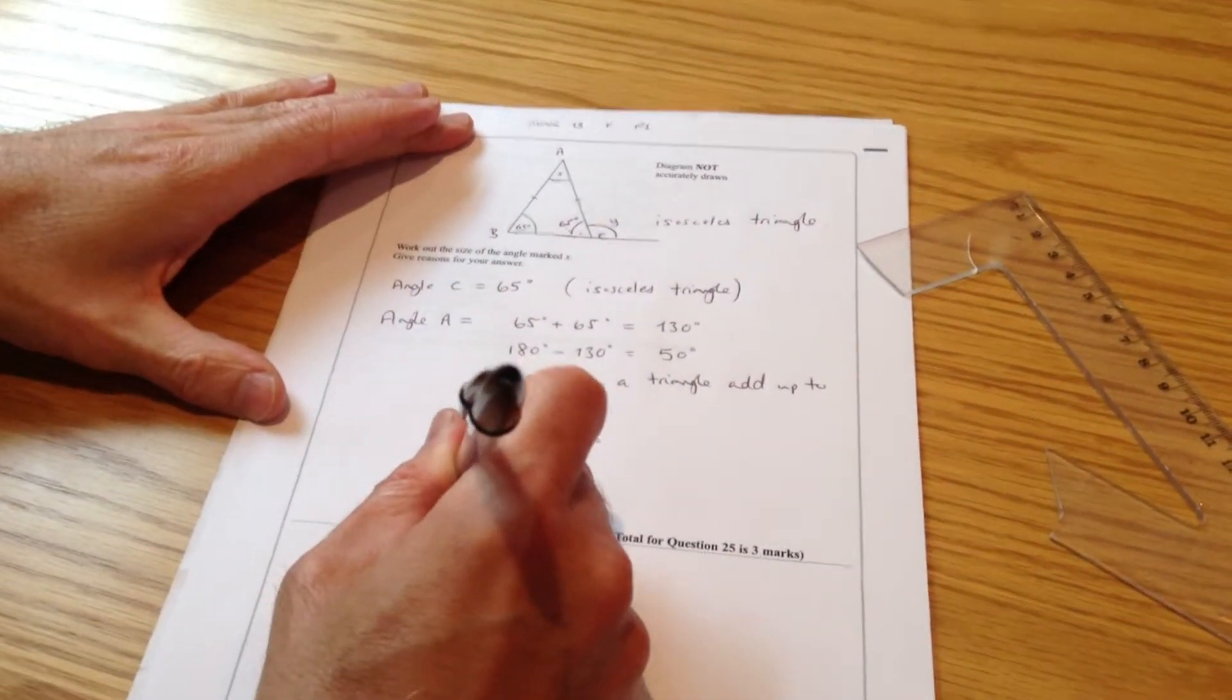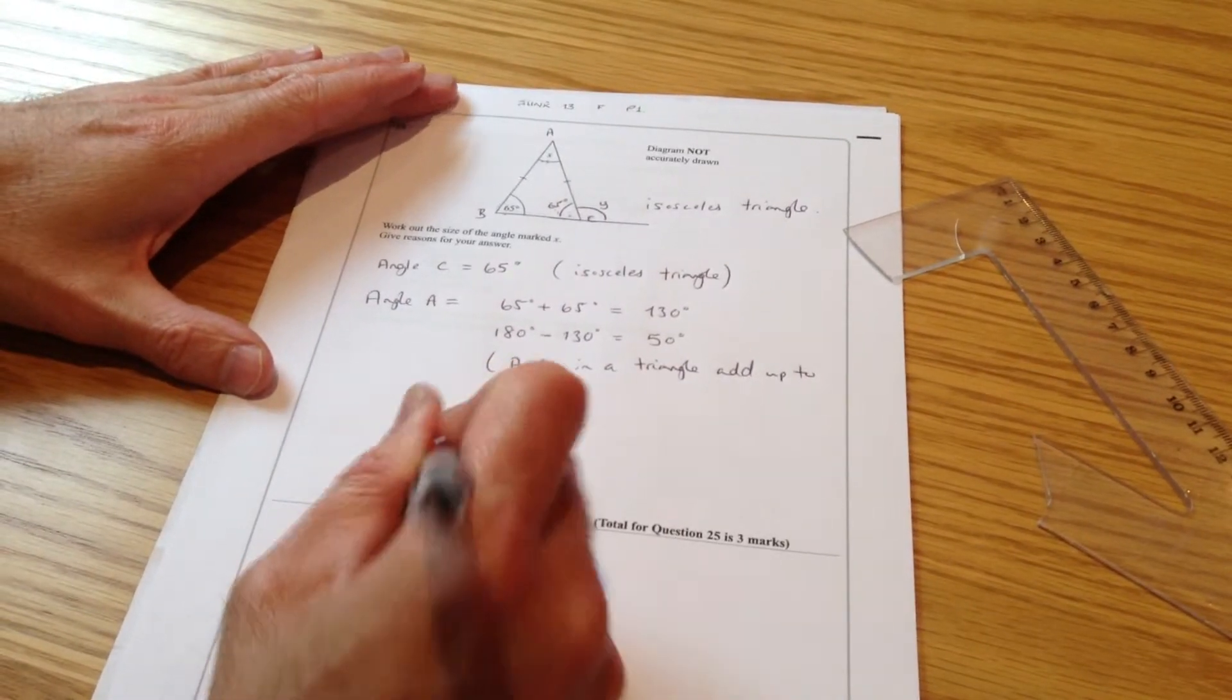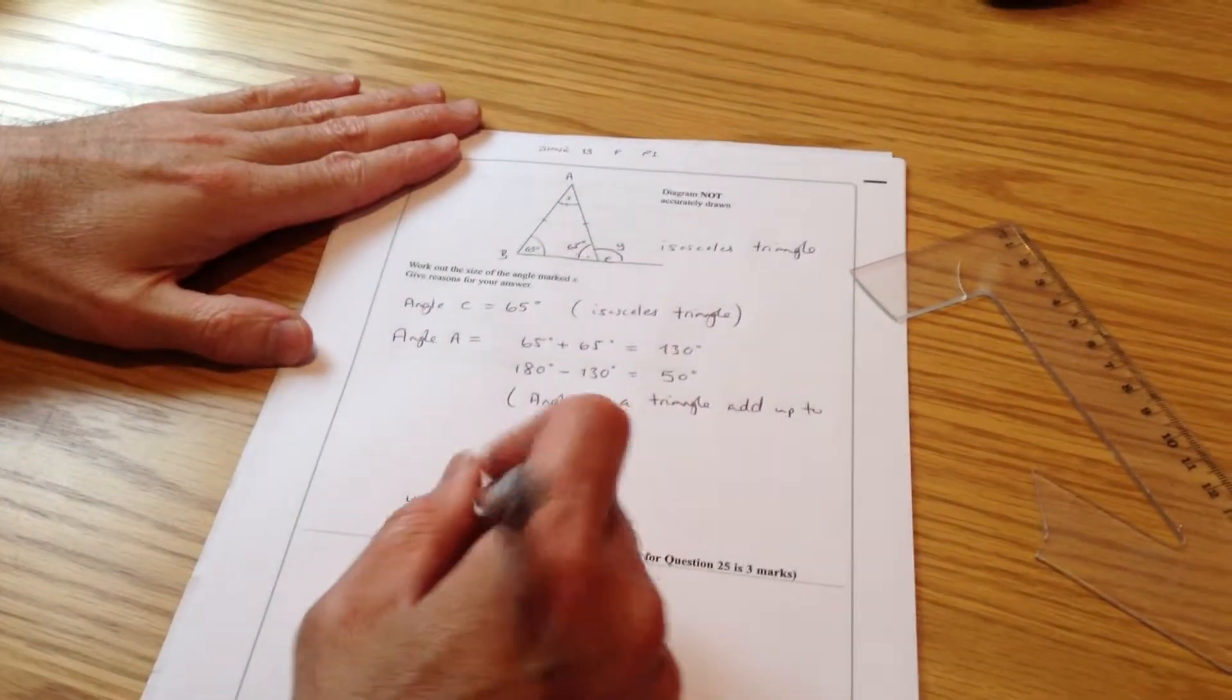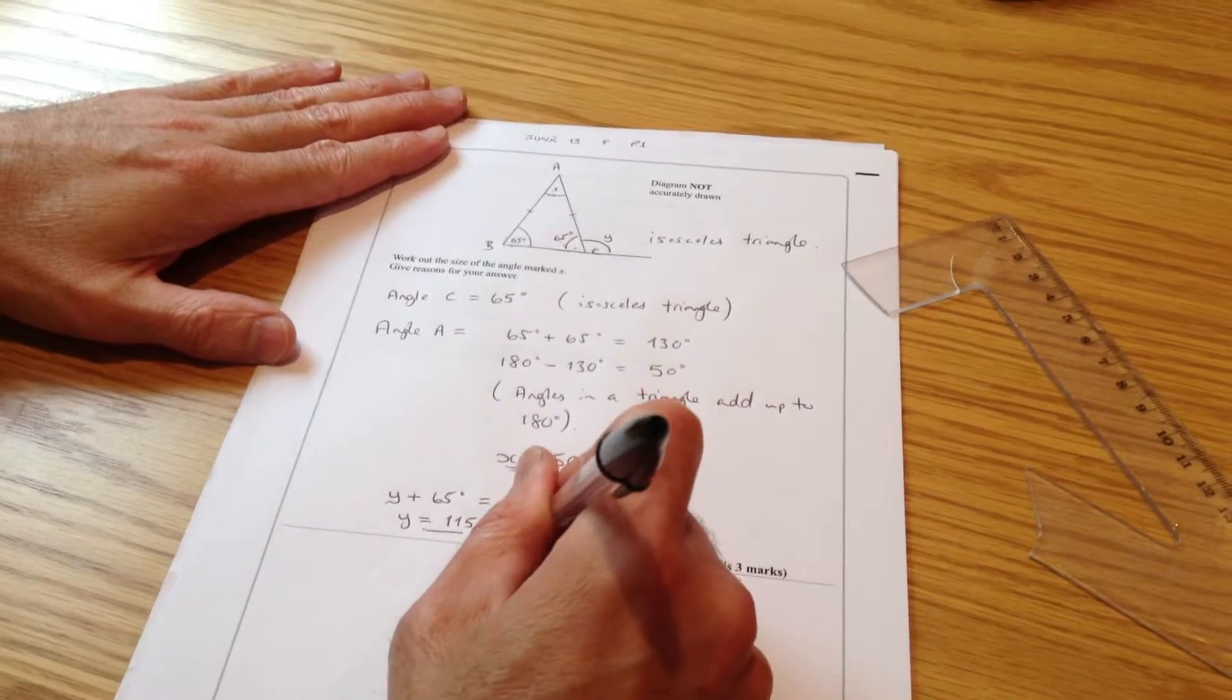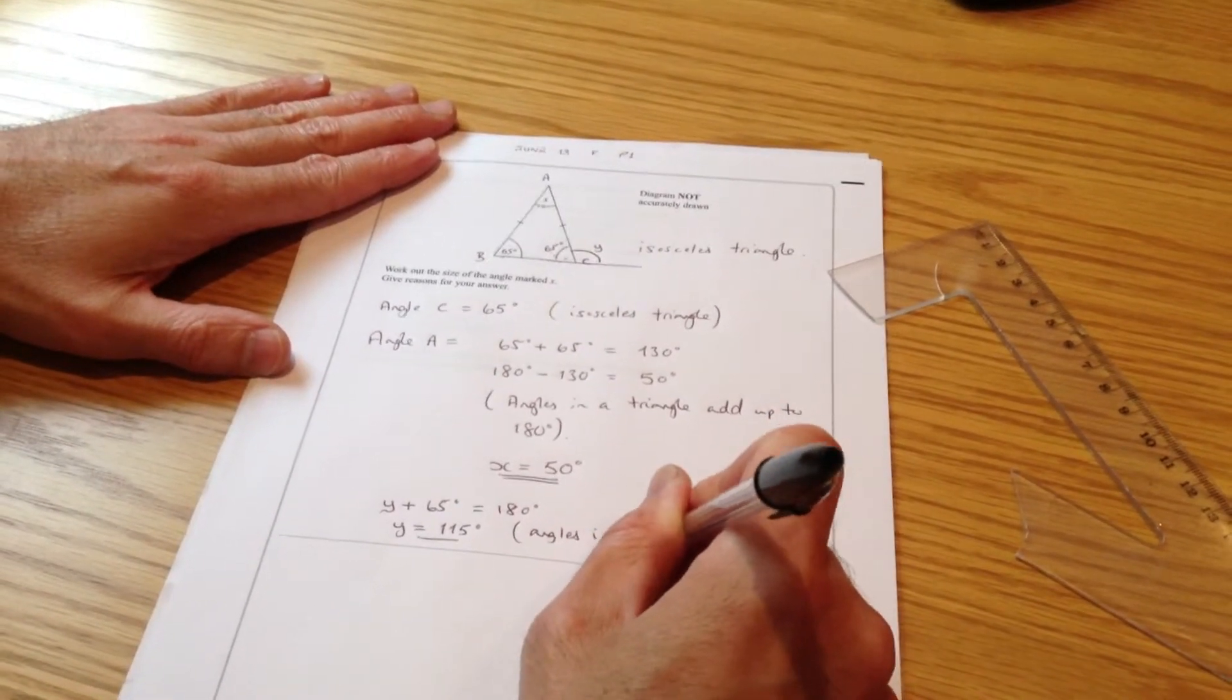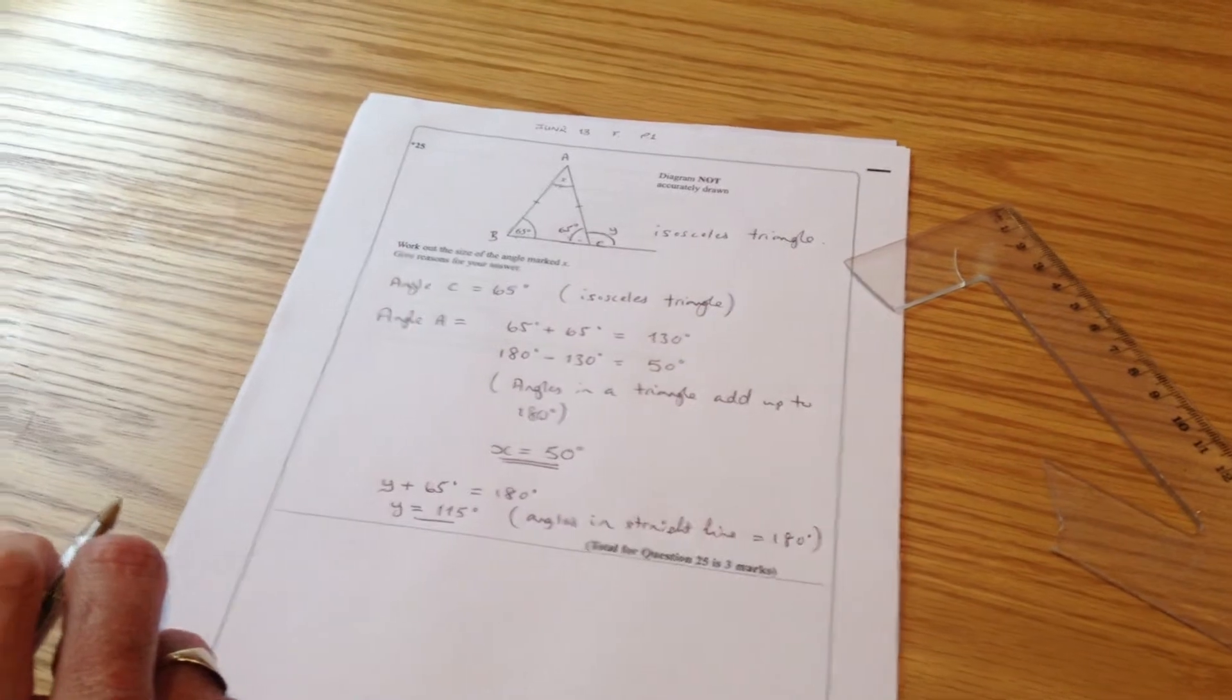So Y plus 65 equals 180. So I should be able to work out angle Y. If I take away 65 from 180, so if I take away 60 I get 120, take away 5 more, that's 115 degrees for angle Y. And the fact I used was that angles in a straight line equals 180 degrees.